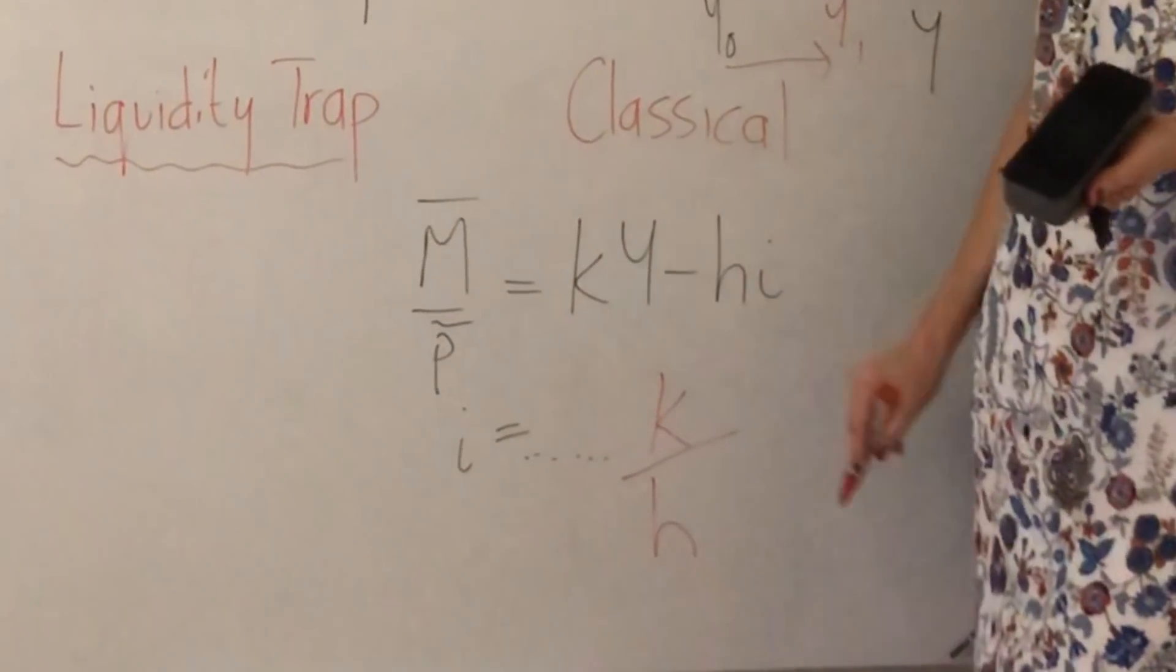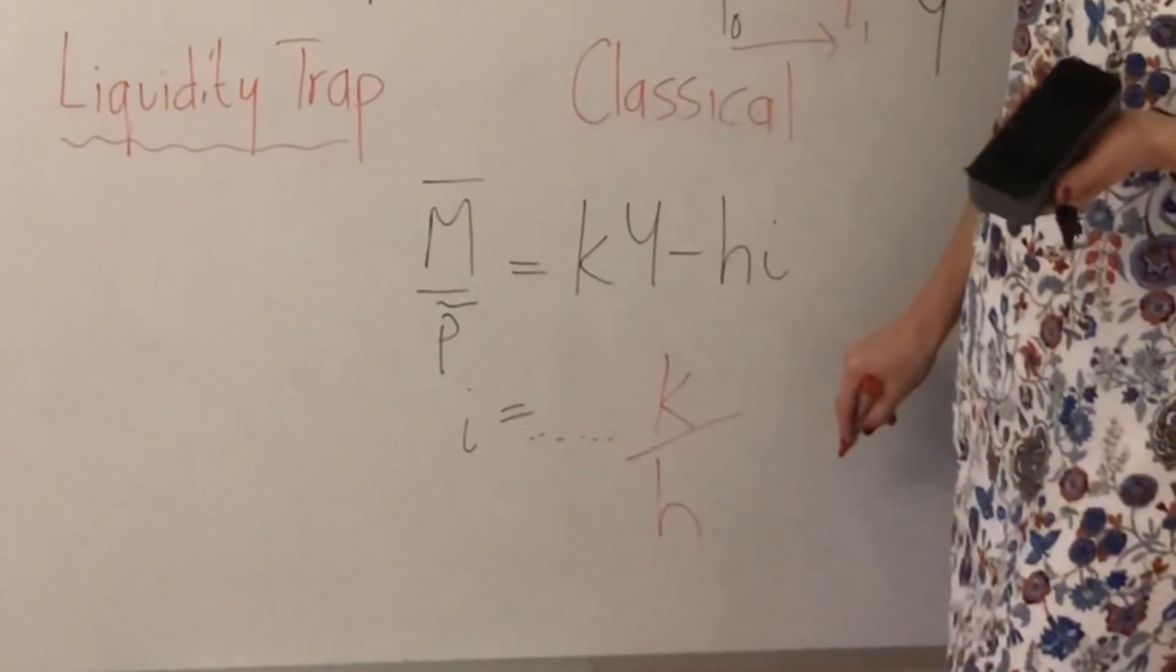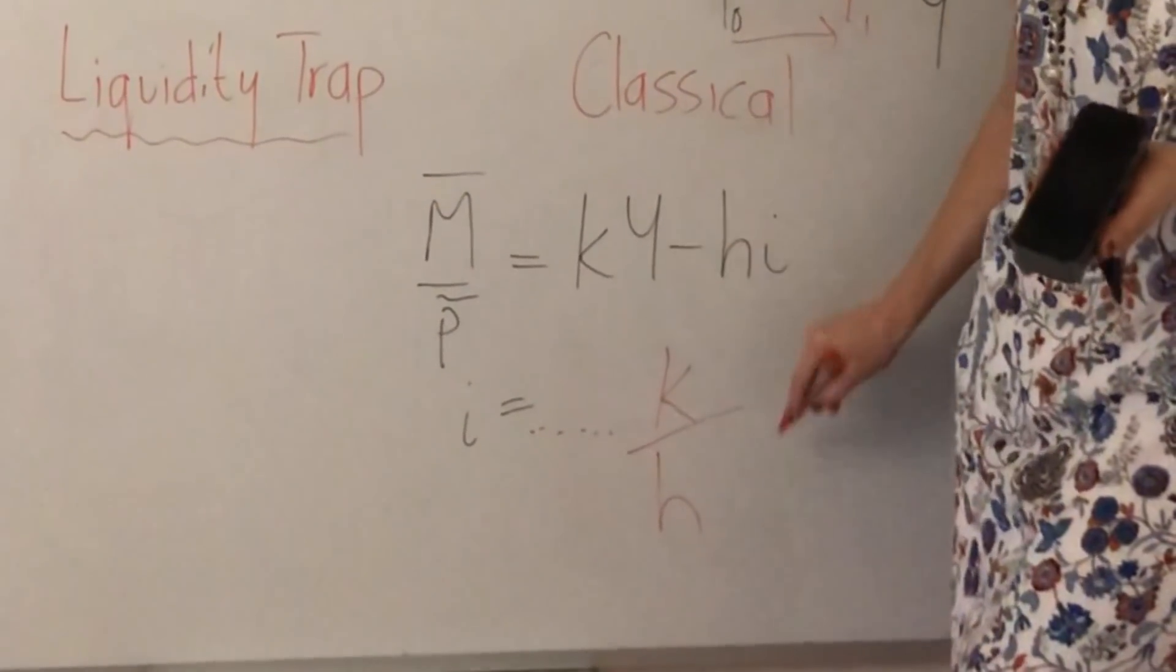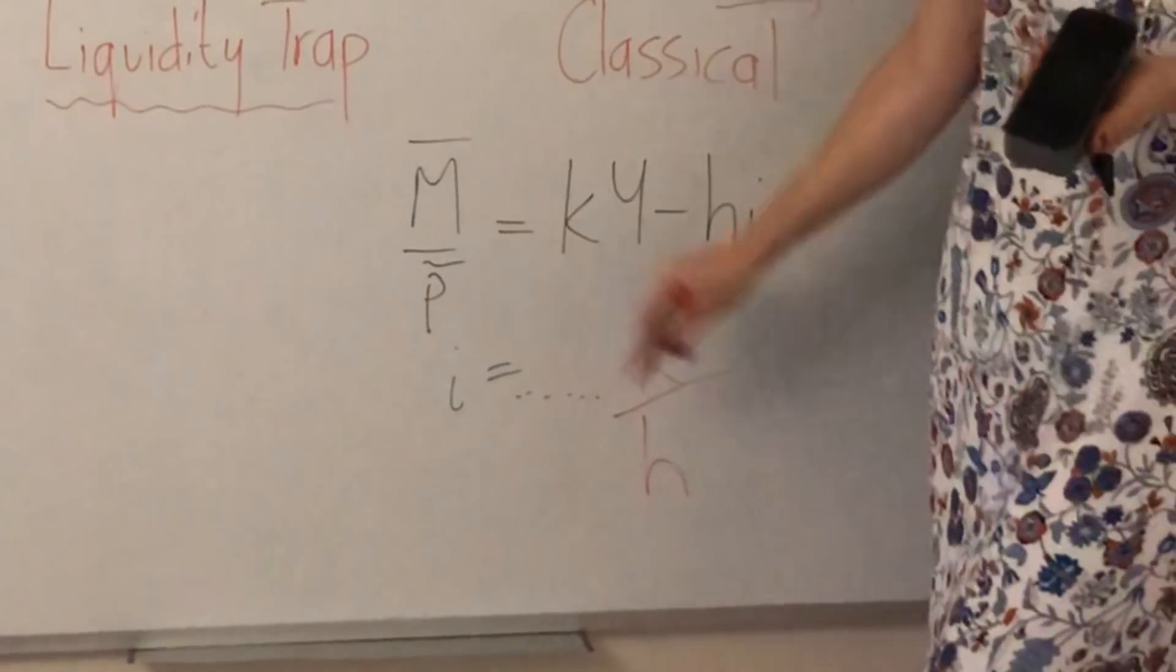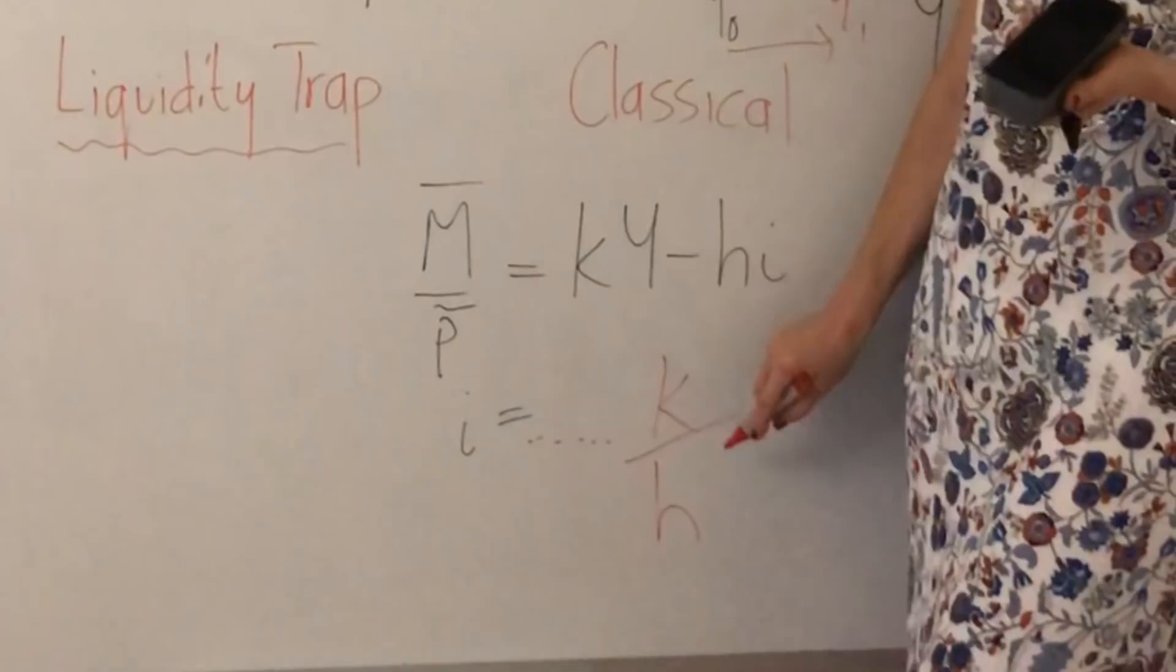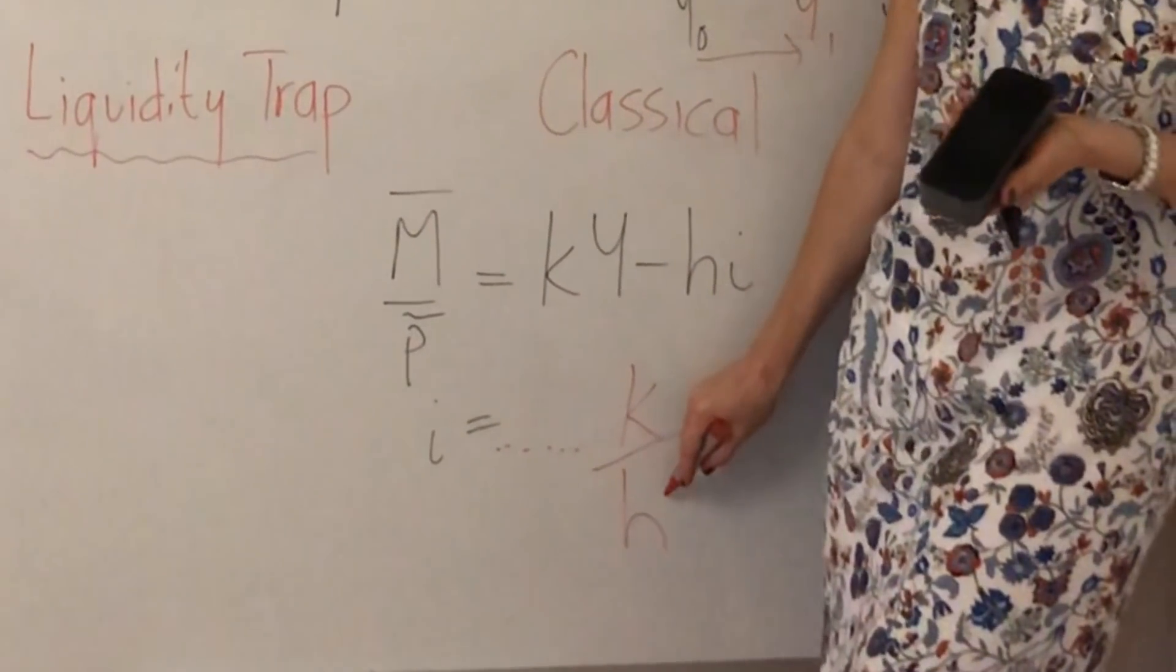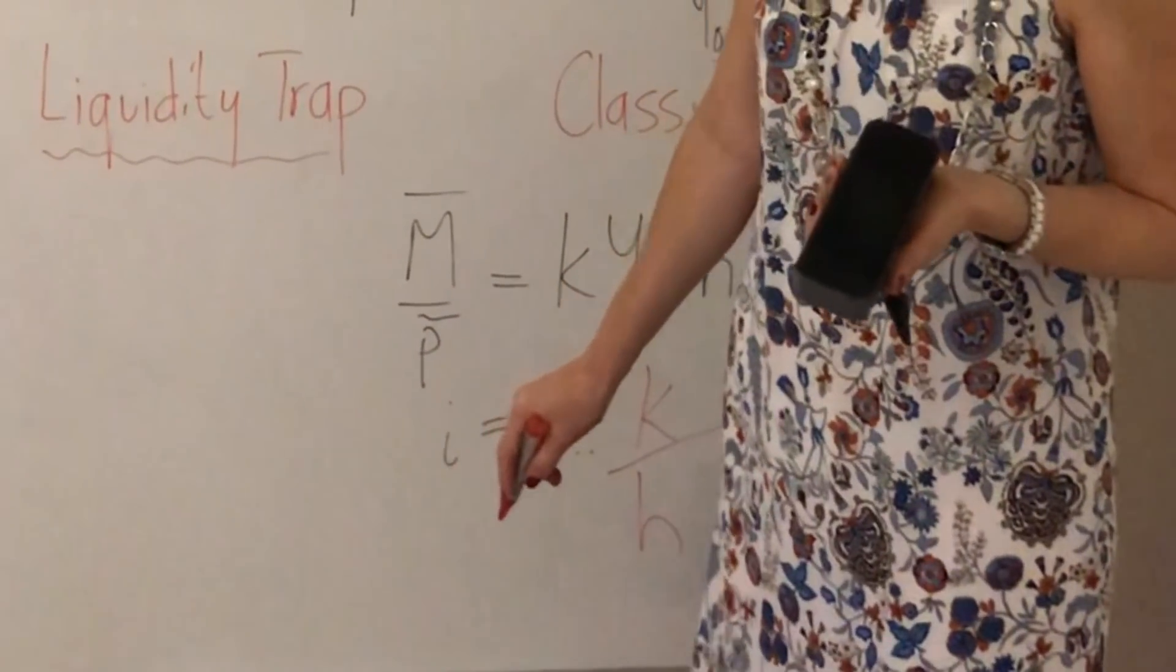And if you rearrange that equation, we get an expression in terms of i, and there's a whole lot of other factors in here too. But the ones that are relevant to us are K over H. The steepness of an LM curve is related to K over H. The higher is K and the lower is H, the steeper will be your LM curve.